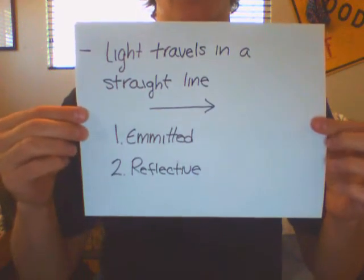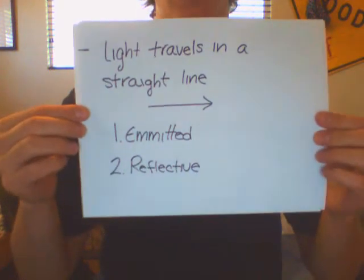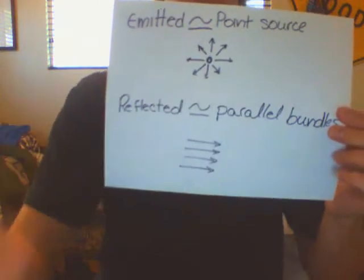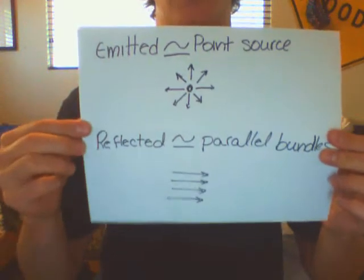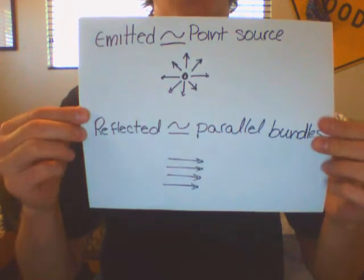There are two sources, or two types: emitted or reflective. Emitted light can be thought of as a point source in which infinite rays of light are emitted from one point.